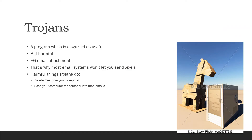That is how Trojans operate — they make themselves look like something useful. It's a piece of software you download, and when you click on it, you get a virus or something harmful happens to your computer. It will often be an email attachment, which is why most email systems won't let you send .exe files. A Trojan can delete files or install software that scans your computer for personal information and emails it back to the person who wrote the Trojan.